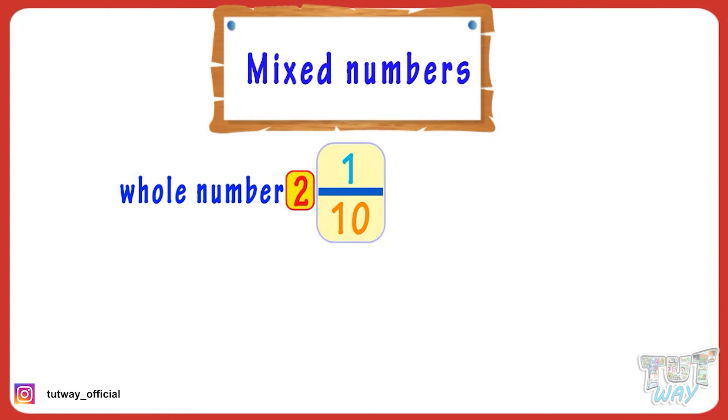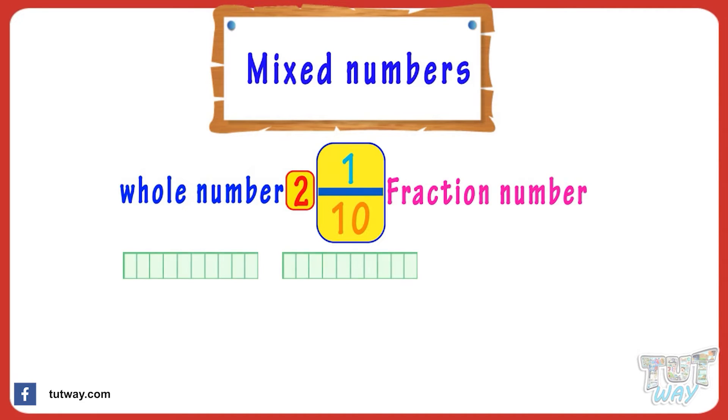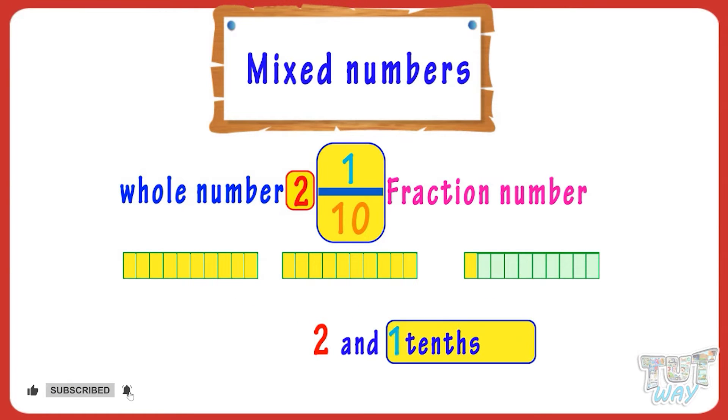And a fraction part, which is 1/10 here. It says that there are 2 whole things and a fraction that is part of a whole. We say this in decimal as 2 and 1 tenth. 1 tenth is written as 0.1, so it becomes 2.1. Now let's take one more example.